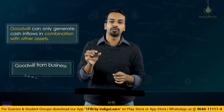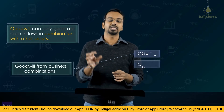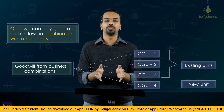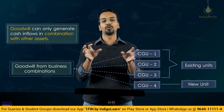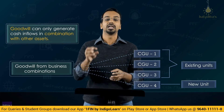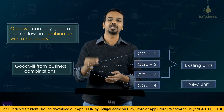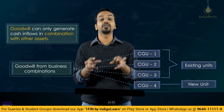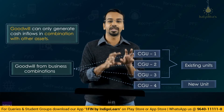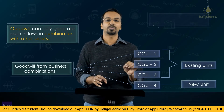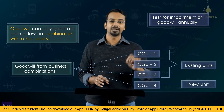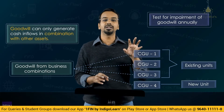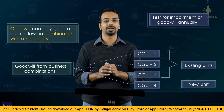Coming to goodwill — whenever there is goodwill arising at the time of a business combination, you will have to allocate the goodwill to the CGUs or group of CGUs which are expected to get synergic benefit out of the business combination. And for whichever units you have allocated goodwill, you will have to test for impairment at least annually, testing for impairment of goodwill along with the related cash generating units.